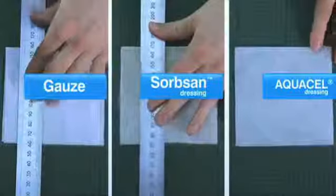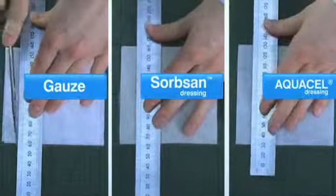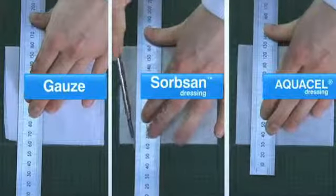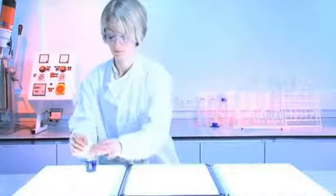We cut a 1.5 cm x 10 cm sample from each product in the machine direction. For the gauze, four layers are cut together to be comparable to Aquacel dressing and Sorbzan.